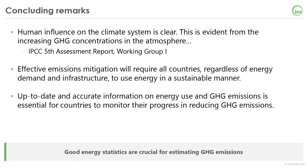To close this webinar, a few concluding remarks. The human influence on the climate system is clear, as evidenced by the increasing greenhouse gas concentration in the atmosphere. Effective emission mitigation will require all countries, regardless of energy demand and infrastructure, to use energy in a sustainable manner. Up-to-date and accurate information on energy use and greenhouse gas emissions is essential for countries to monitor their progress. Therefore, greenhouse gas emission estimates will only be as good as the energy statistics they are based on.